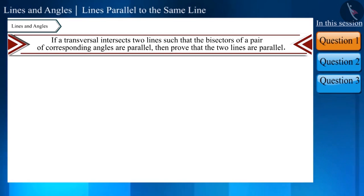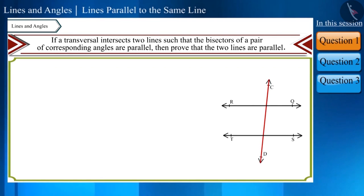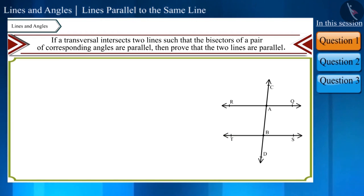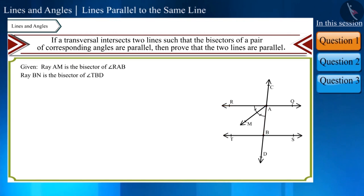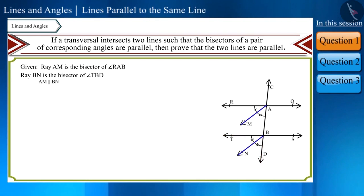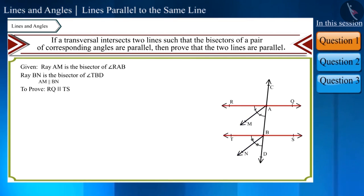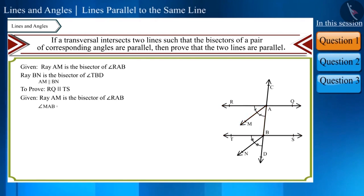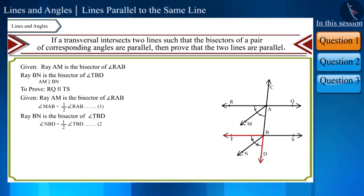Let's draw a figure with the help of the statement. Transversal CD intersects line RQ and line TS at points A and B respectively. Ray AM is the bisector of angle RAB and ray BN is the bisector of angle TBD. According to the statement, ray AM and ray BN are parallel, and we have to prove that lines RQ and TS are parallel. Ray AM is the bisector of angle RAB, so we can write angle MAB, and similarly angle NBD as ray BN is the bisector of angle TBD.